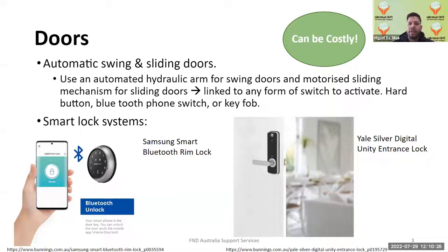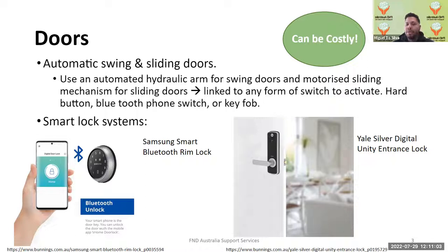You can use a hard button to open the doors if you don't want to use the phone app. The two options displayed are just variations — not all available options. On the left is the Samsung Smart Lock, which links directly to your phone and lets you enter a password and unlock the door. On the right is the Yale Silver Digit entrance lock — also a smart lock, same system, straight to the phone.